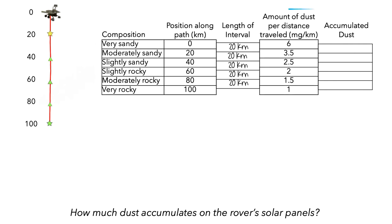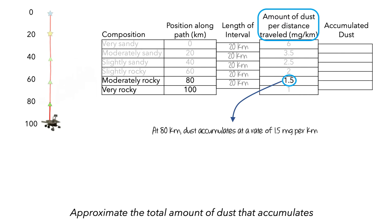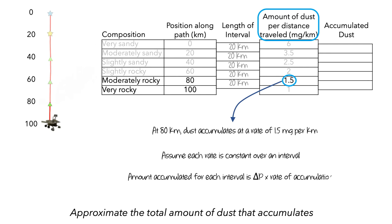The next thing we need to do is to recognize that the data we have are rates. For example, the value 1.5 means that when the rover is 80 kilometers along its path, dust is accumulating at a rate of 1.5 milligrams per kilometer — so for each additional kilometer the rover travels, it accumulates 1.5 milligrams of dust. As the rover travels from 80 to 100 kilometers, the composition changes from moderately to very rocky, and we don't know how quickly this change happens. Consequently, we can't find the exact amount of dust that accumulates over this interval. The best thing we can do is approximate it by assuming that each rate is constant over the corresponding 20 kilometer interval. Then we find the amount of dust for each interval by multiplying the change in position by the rate of accumulation.